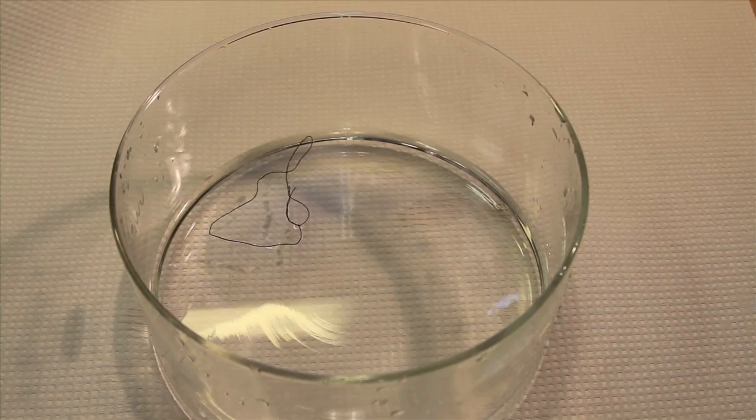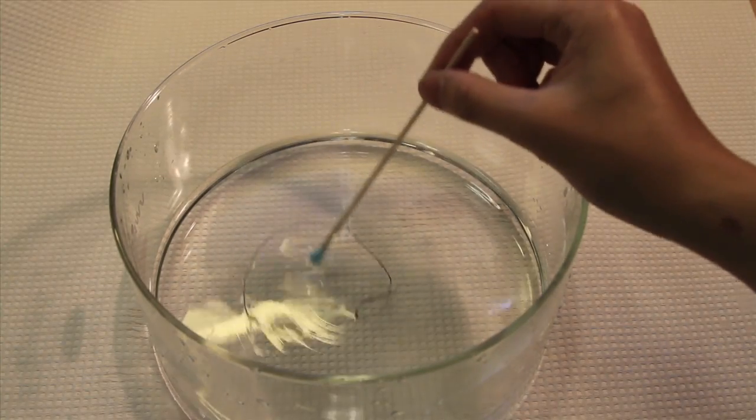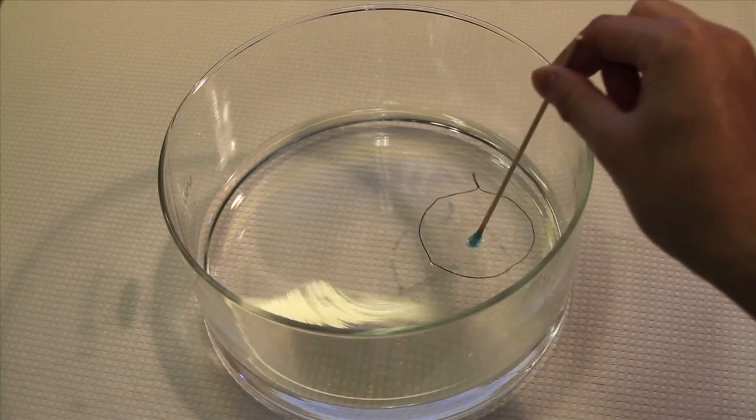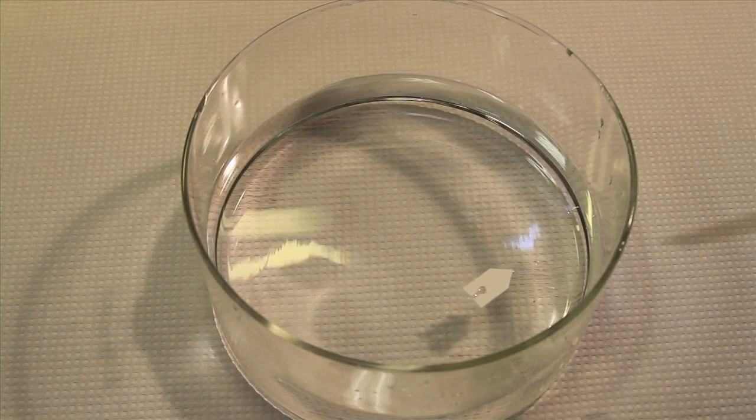We can also see the Marangoni effect cause this string to expand when we add soap to the middle of it. Fluid is flowing away from the region of low surface tension, that is the region with soap, causing the string to expand. Now let's look back at our soap powered boat.